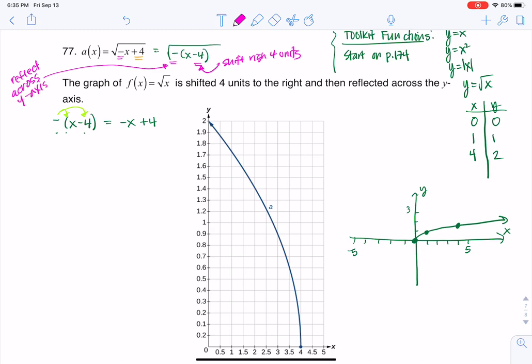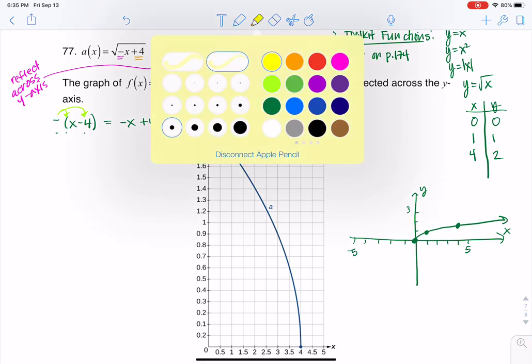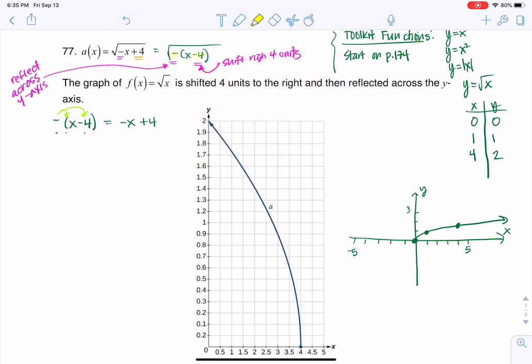At this point, you could plug into technology, whether that's a graphing calculator or some kind of program you have on your computer or your device, and you could see what your graph looked like. But what I want to show you is how these three ordered pairs somehow get translated to this graph. We're going to do PEMDAS. So PEMDAS would have me do the minus 4 first, and then the reflection second. So I'm going to shift right 4 units, and then I'm going to reflect across the y-axis.